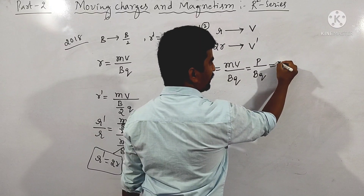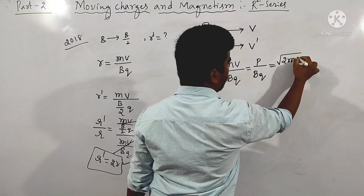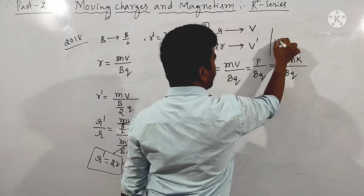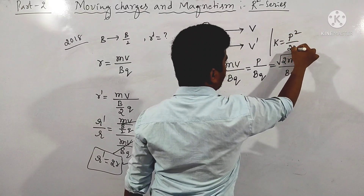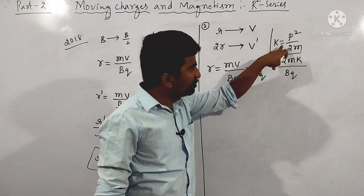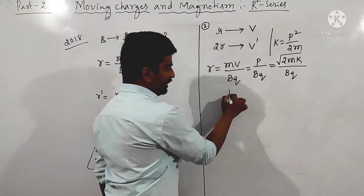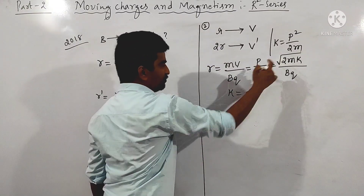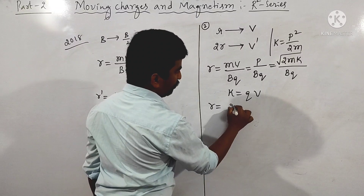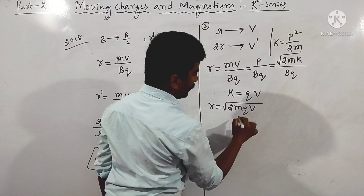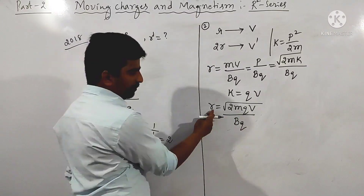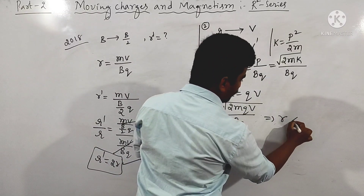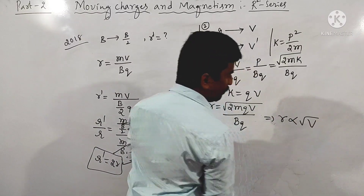Now, kinetic energy equals P squared divided by 2m, so P equals square root of 2mK. Kinetic energy gained equals qV, so P equals square root of 2mqV. Therefore r equals square root of 2mqV divided by Bq. This shows radius is directly proportional to the square root of the potential difference. Taking the ratio: R1 divided by R2 equals square root of V1 divided by V2, so squaring both sides gives V2 equals V1 times (R2/R1) squared.